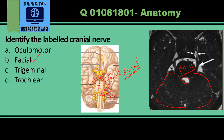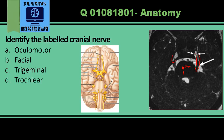Looking at the image again, this nerve is arising from the pons, it is a thick nerve, and it is going into Meckel's cave. So this is the trigeminal nerve, and the correct answer is trigeminal.